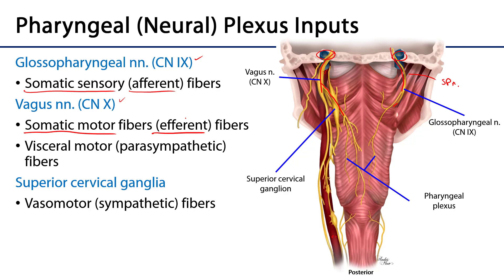Adjacent to the carotid sheath, the cervical sympathetic trunk is typically found a little posterior and medial to the sheath. We can see the superior cervical ganglion of the cervical sympathetic trunk, along with the middle and inferior ganglia. That superior cervical ganglion provides postganglionic sympathetic fibers to the plexus. These are vasomotor fibers that find their way into the walls of the vasculature supplying the plexus.